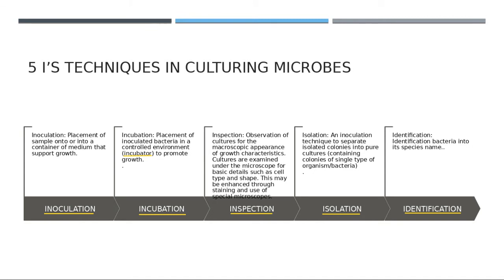If we want to continue to identify what species that is, we go to the next process called Identification. There are three different methods to identify microbes: the first uses phenotypes, which is the characteristic of bacteria based on their shape; the second method uses DNA, called the genotype; and the last method uses the antigen-antibody complex, called the immunological method. We will learn the identification of microbes in Chapter 17.